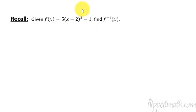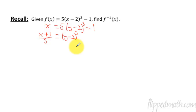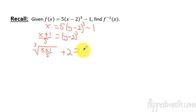First let's remember how you even find an inverse. This comes from swapping out the x's and y's. So if this is y, let's change this to x equals 5, then replace the x with a y. You swap the x's and y's, solve for y, and that's the inverse. So if I add 1 and then divide by 5, you get y minus 2 cubed, then take the cube root of both sides and add 2. The final answer would be the cube root of (x plus 1 over 5) plus 2, and that equals y. So this would be the inverse function of the original: 5 times (x minus 2) cubed minus 1.